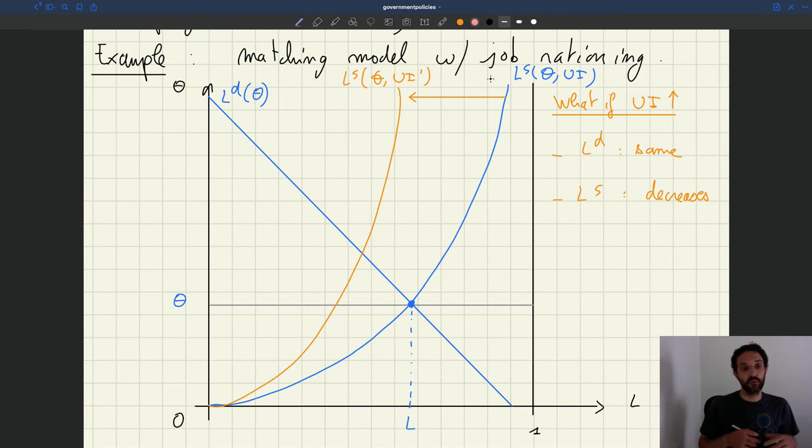So then what would happen to that worker? Well, that worker would face the same tightness, but with a higher UI, the worker would search less. If you increase UI for just one unique worker, the probability to find a job for that one worker would be less. By how much less? Well, that's what's described here.